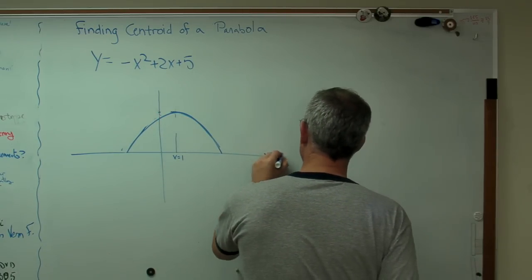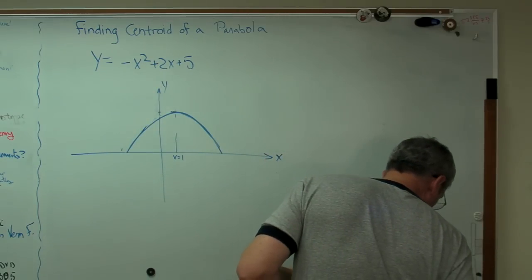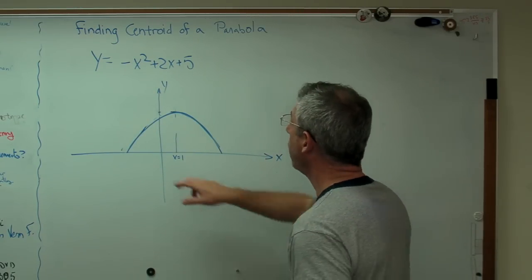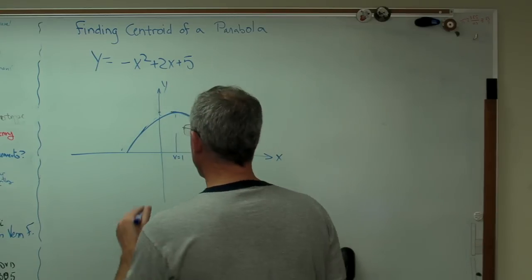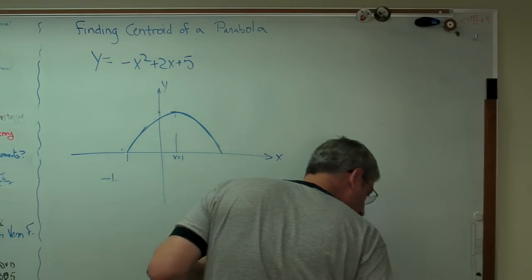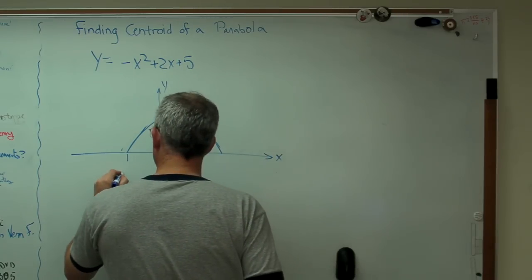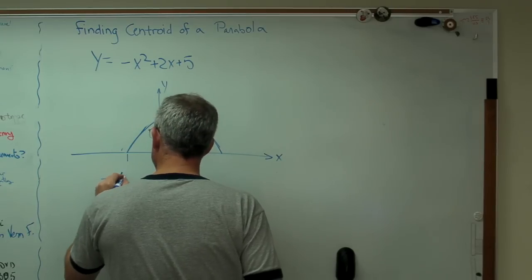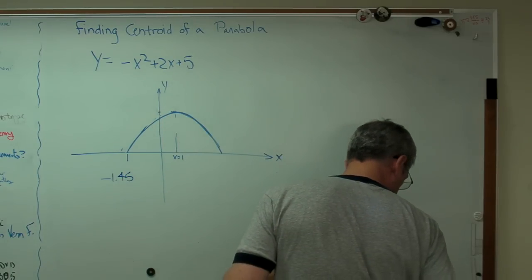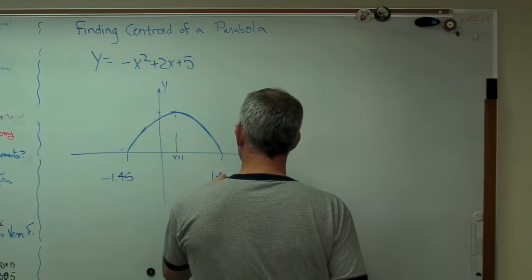And it crosses the x axis at, let's see, I've got to find the roots of this too. I went ahead and used the quadratic equation. That root right there is minus 1.45, basically. It's actually 4494 something. I'm going to call it 1.45 just to make things easy. And that's 1.45.